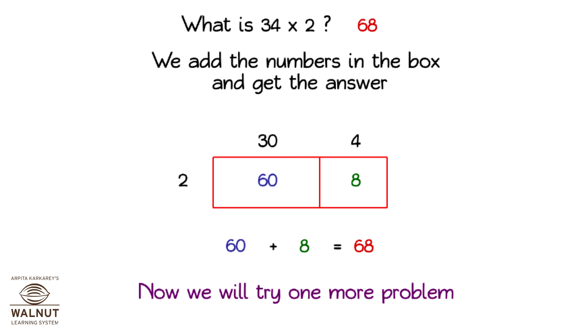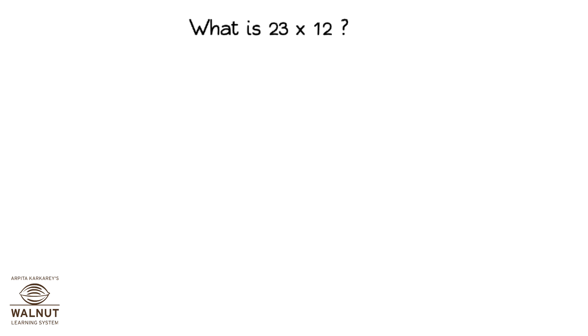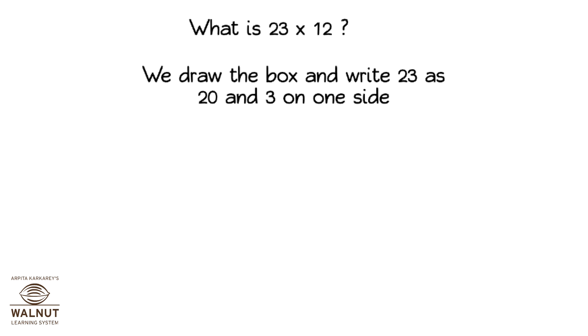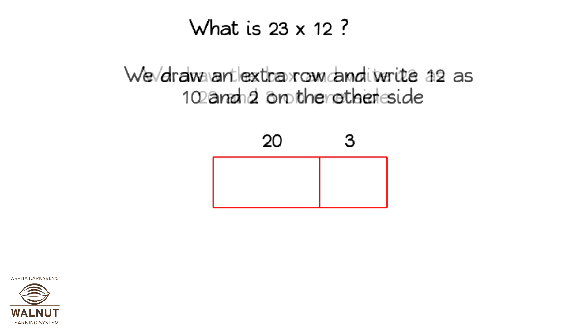Now, we will try one more problem. What is 23 into 12? We draw the box and write 23 as 20 and 3 on one side. We draw an extra row and write 12 as 10 and 2 on the other side.